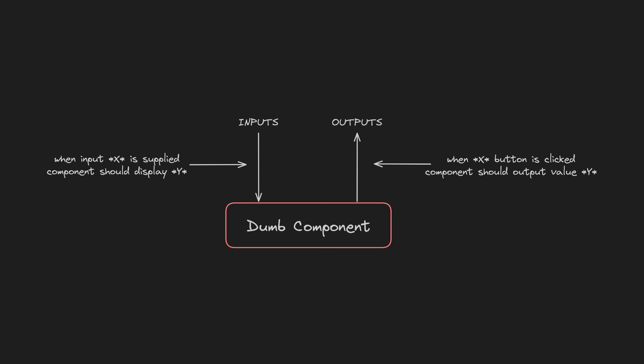A great place to start is testing the inputs and outputs of your dumb components. That is, components that are mostly responsible for accepting an input, displaying something to the user, and communicating any user interaction back to the parent component through an output. It is relatively easy to reason about what the tests for these types of components should be: if this component has this value for this input, what should happen? Or what needs to happen for this output to be triggered with this specific value?